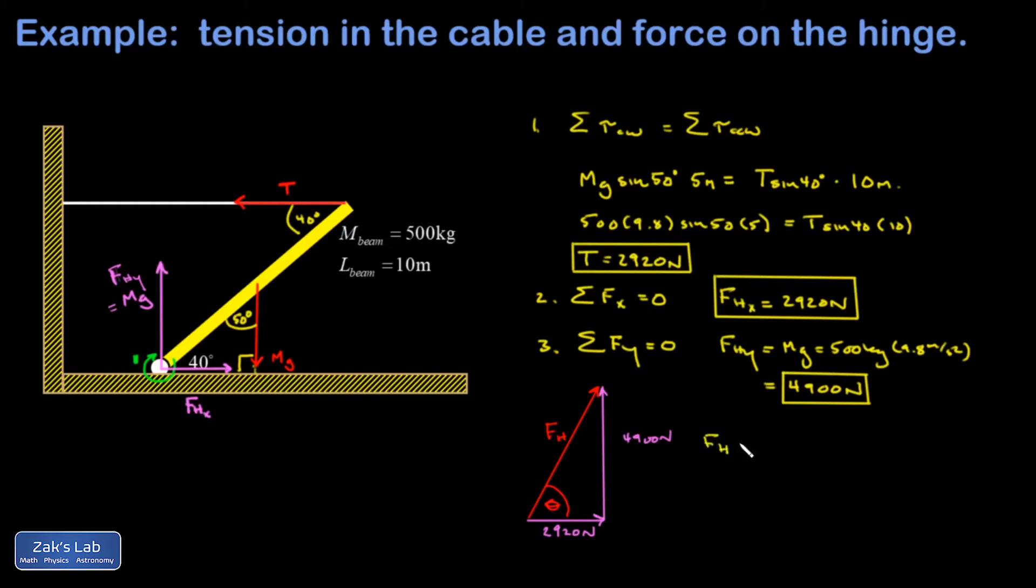So the magnitude of my hinge force is going to be given by the Pythagorean theorem. And I have the square root of 4,900 squared plus 2,920 squared. And when I crunch the numbers, I get 5,704. And keeping three sig figs, I'll write it as 5,700 newtons. And then my angle is the angle whose tangent is 4,900 over 2,920. And when I crunch the numbers on that, I get 59.2 degrees.